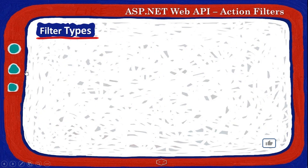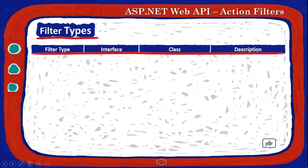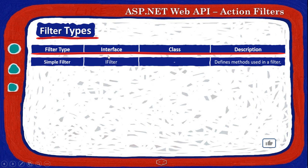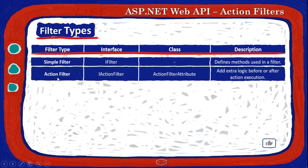Let's move to the next topic: filter types. We have a table with filter type, interface, class, and description. The first one is the simple filter with just an interface iFilter, no classes, and it just defines methods of a filter. The next one, the action filter — the main subject of this video — has an interface iActionFilter and a class ActionFilter attribute. It adds extra logic before and after action execution.